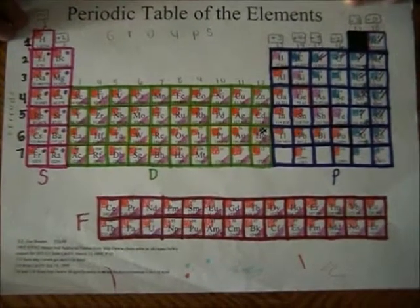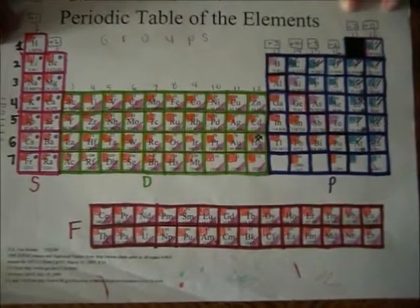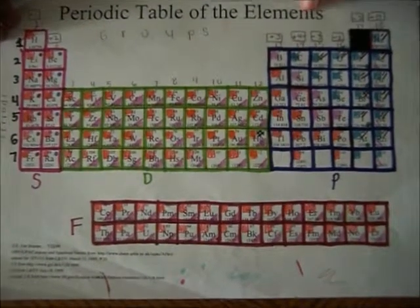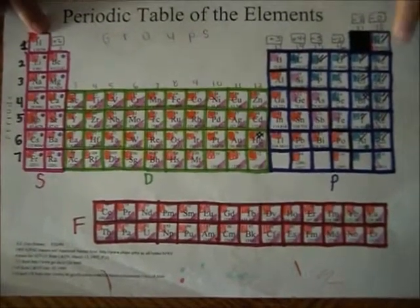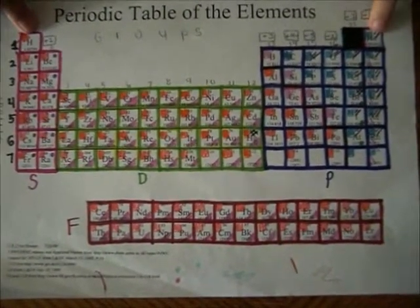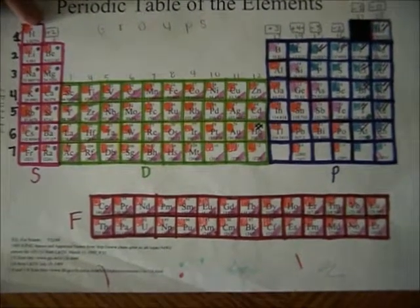For example, if you're trying to find the electron configuration for carbon, you start off with the first period. You count the elements in the S block, and that will be 1s2.